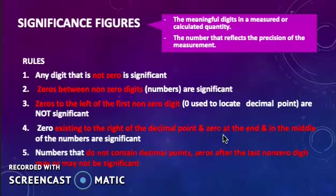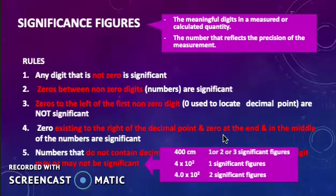Rule number 5, numbers that do not contain decimal points, 0 after the last non-zero digit may or may not be significant.